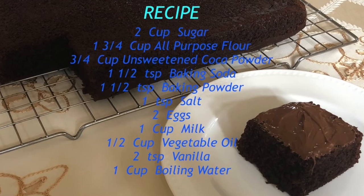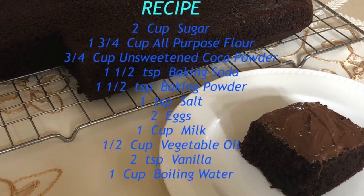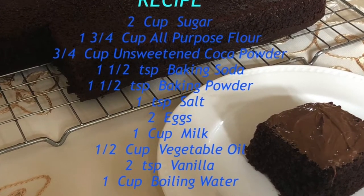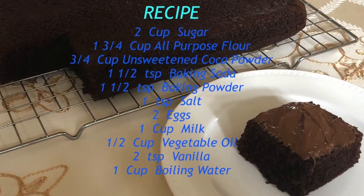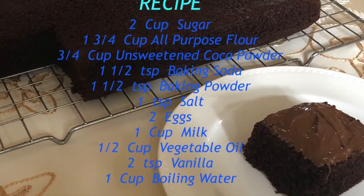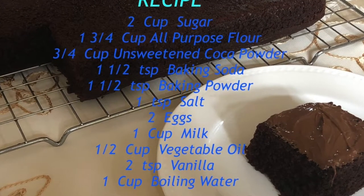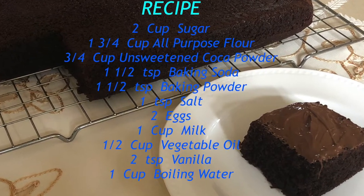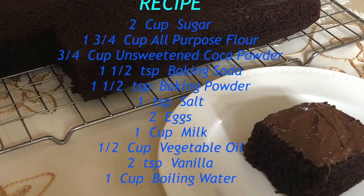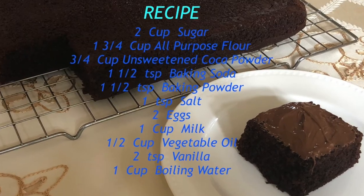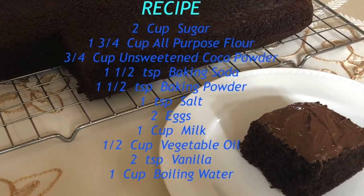For the basic chocolate cake, you can add the coconut powder, baking soda, baking powder, fresh milk, and vanilla.